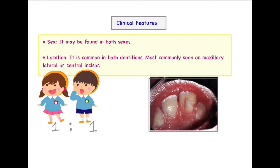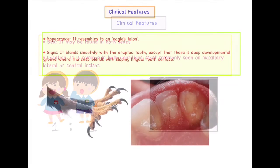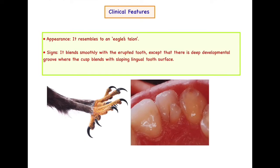Regarding location, as previously specified, this dental anomaly is present only in maxillary and mandibular incisor teeth. It is most commonly associated with the maxillary central incisor as well as the lateral incisor. It can occur in both dentitions — deciduous as well as permanent. Clinically, we see an excessive cusp-like growth emerging from the cingulum area, blending smoothly with the erupted tooth except at the area of a deep developmental groove where the cusp blends with the sloping lingual tooth surface.